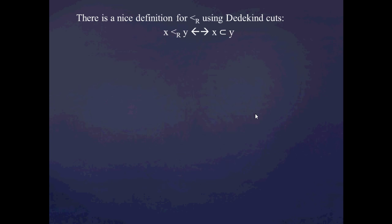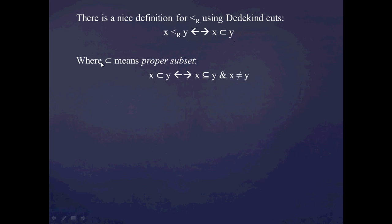One really nice thing about Dedekind cuts is that there's a nice definition for 'less than': if I have two real numbers X and Y, I say that X is less than Y if and only if X is a proper subset of Y. Proper subset means X ⊆ Y and X ≠ Y — all members of X are in Y, but there's still something in Y which is not in X.